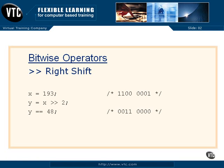We also have a bitwise right shift. Starting with our 193, Y is equal to X right shifted by two. This causes bits to shift right by two positions — the two 1-bits shift down, the 1-bit on the low end falls off into space and is gone, and new zero bits come in on the left. We get a new value of 48. That's a bitwise right shift.